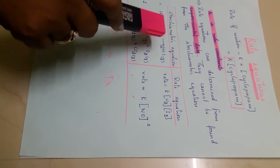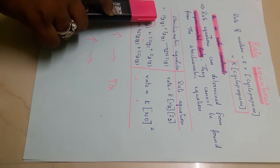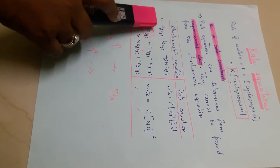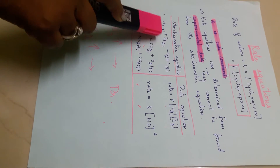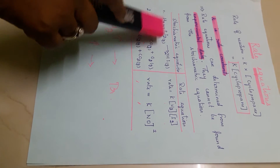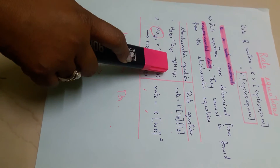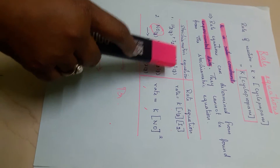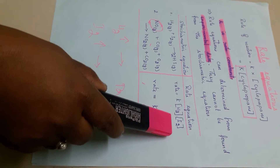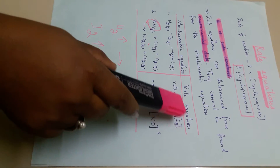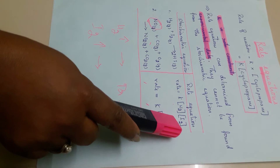For example, if you take this reaction — hydrogen gas reacts with iodine gas — these both react together and give you hydrogen iodide. In this case, the rate equation is K[H₂][I₂], involving the change in concentration of H₂ and the change in concentration of I₂.